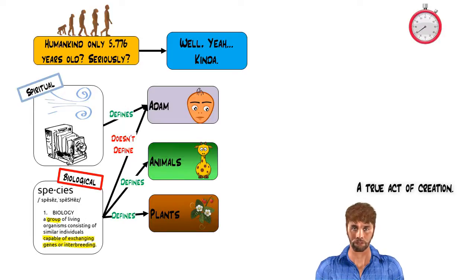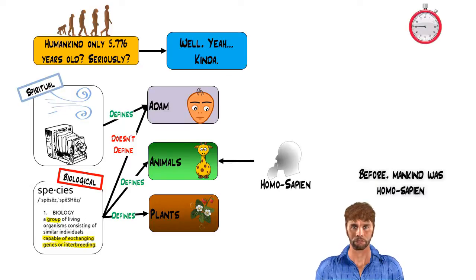What made Eve special is that she was formed of the same spiritual material. Before mankind was Homo sapien, a really smart animal.